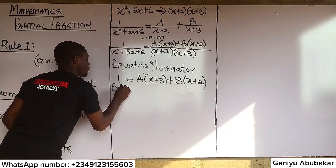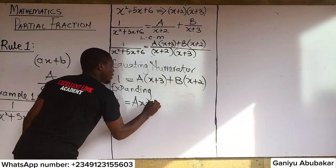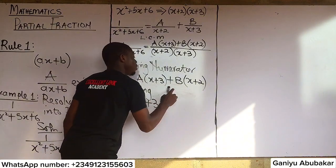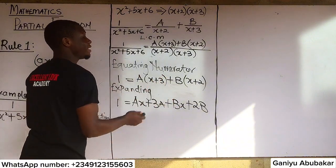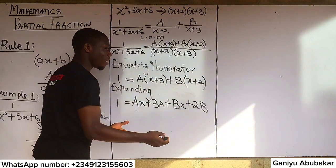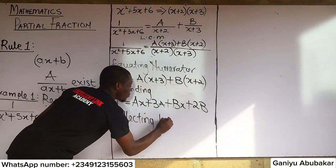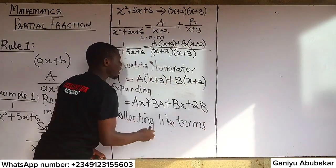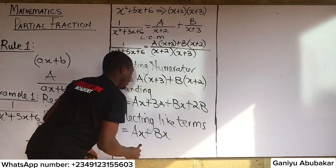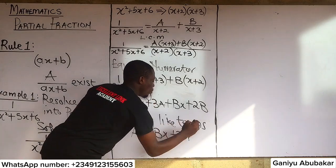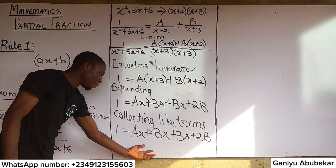Expanding: 1 = ax + 3a + bx + 2b. Now collecting like terms: 1 = ax + bx + 3a + 2b.